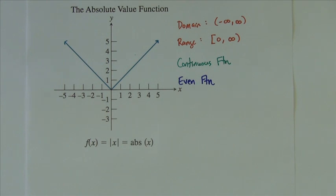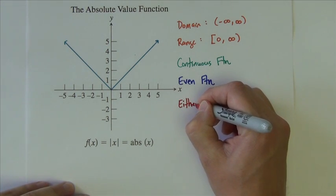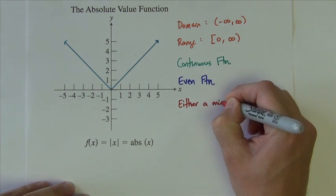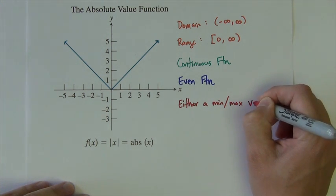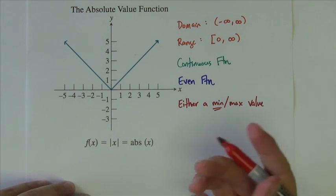This basic one does. It does have, I'll just write it like this. It has either a min or max value. It cannot have both.